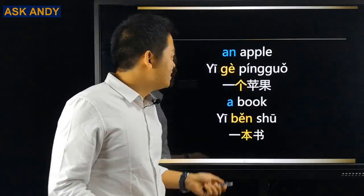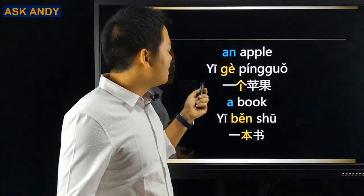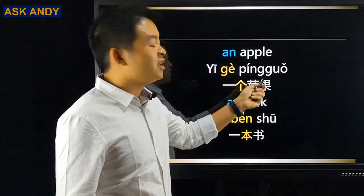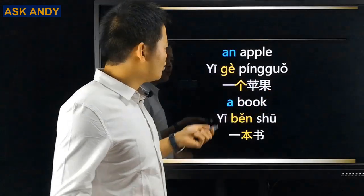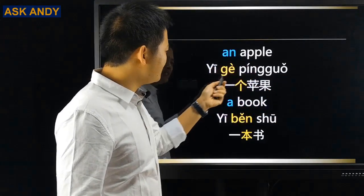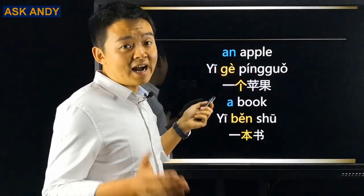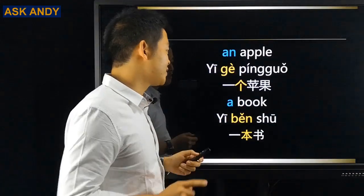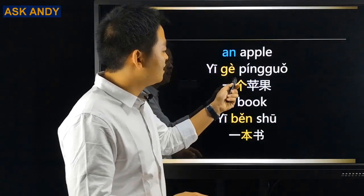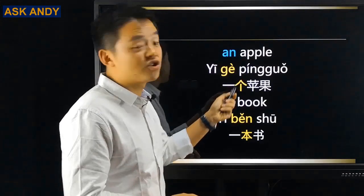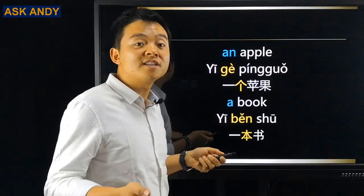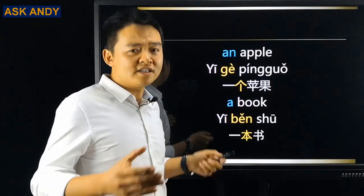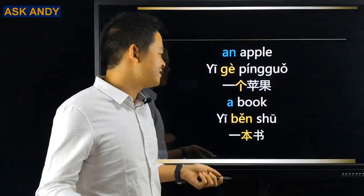This one — 'an apple.' In Chinese it is 一个苹果. But in English we just say 'an apple.' So what is this 个? This is the point which is difficult for English speakers — we have 个 as the measure word, but we don't have that in English. It is not difficult, it is just different.